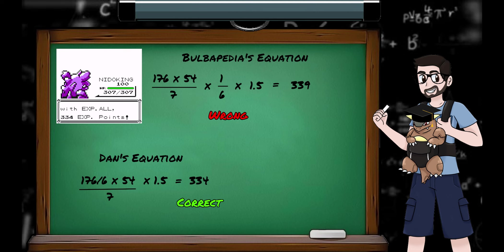Skipping ahead to a later bit of the video, using the Gen 3 equation for Gen 1 is giving me 339 experience for my XP all Charmander, when in reality it's 334. Not a big difference, but we're all about the facts on this channel, except for the time I forgot Rock Throw has accuracy.